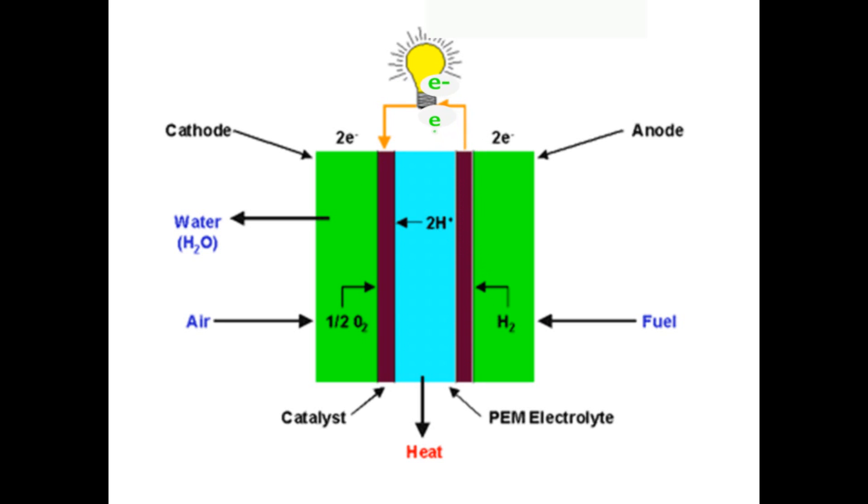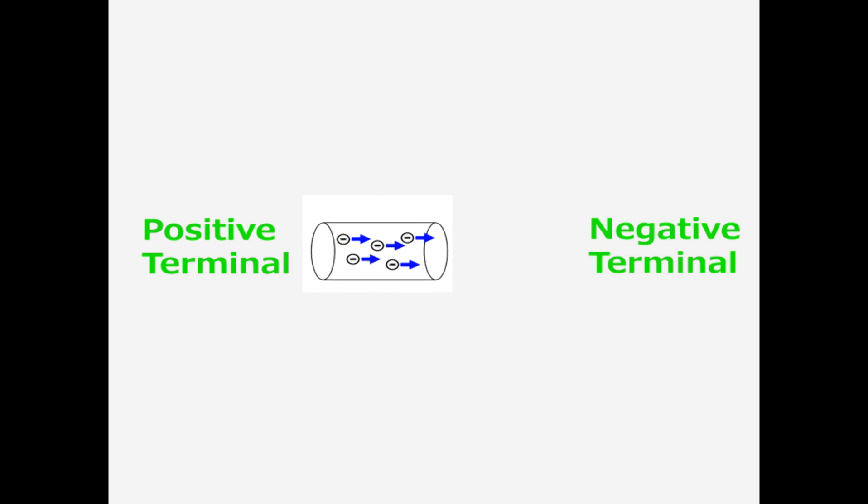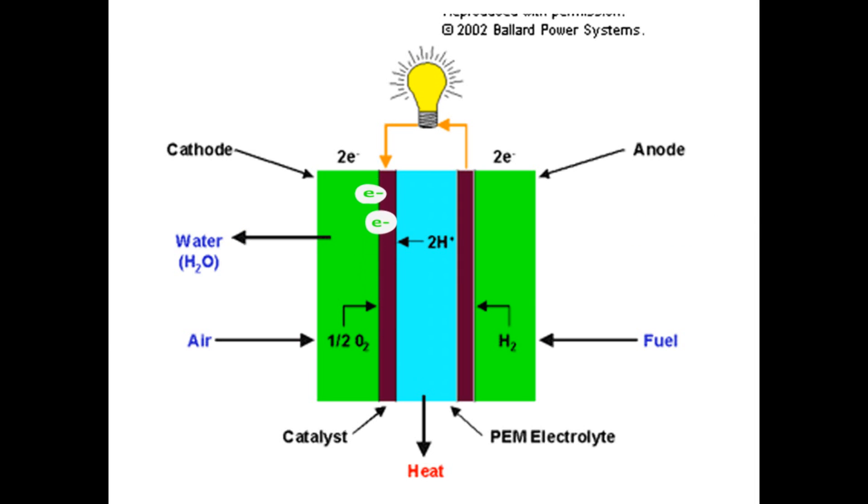When a battery is recharged, the reverse process takes place. The main thing is, the electrons this time go from the positive terminal to the negative terminal. And after all the electrons are transferred, the battery is ready to be reused.